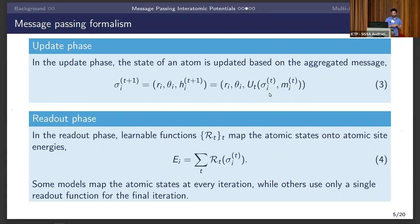After message passing comes the update phase, where the state of an atom is updated based on the aggregated message via an update function. Finally, a readout phase maps this collection of states to a scalar quantity — the energy. Some models read out only the last state; others read out multiple states.